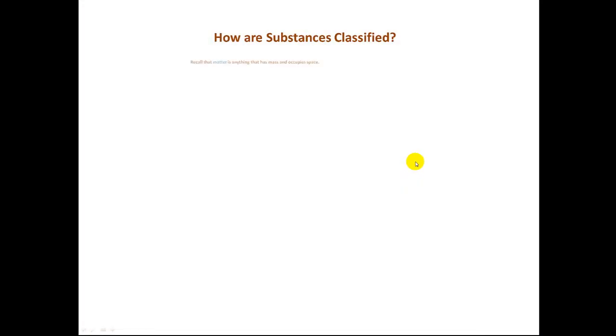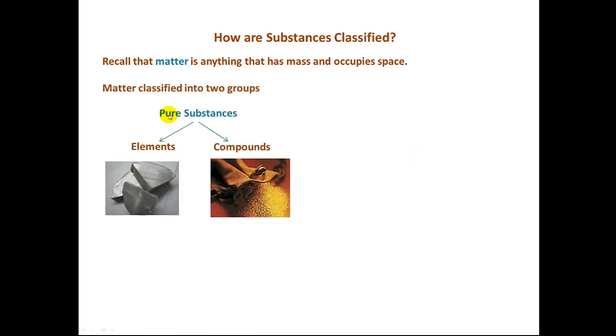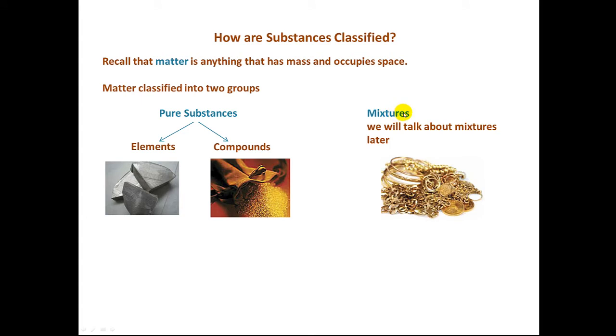How are substances classified? Recall from the last chapter that matter is anything that has mass and occupies space. Matter is classified into two groups: pure substances and mixtures. Now, we'll talk about mixtures a little bit later. For now, we want to concentrate on pure substances.